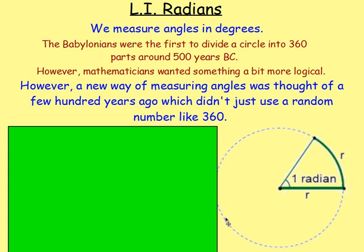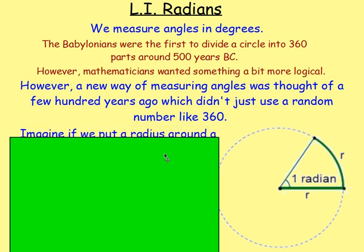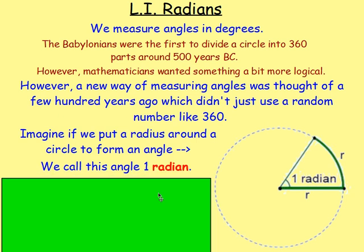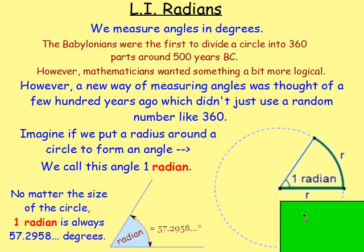Imagine if you've got a circle. If you have the radius of that circle drawn in, imagine if you took that radius and then you bent it around the circumference, and then joined it up with another radius to the centre of the circle. You will then form an angle, and this angle that you form is known as one radian. It doesn't matter if the circle is tiny like a five pence piece or if the radius are really big like the London Eye, one radian always works out to be 57.2958 degrees.